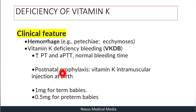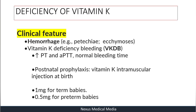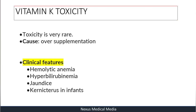Postnatal prophylaxis consists of a Vitamin K intramuscular injection at birth to treat and prevent Vitamin K Deficiency Bleeding. The dose is 1 mg for term babies and 0.5 mg for preterm babies.